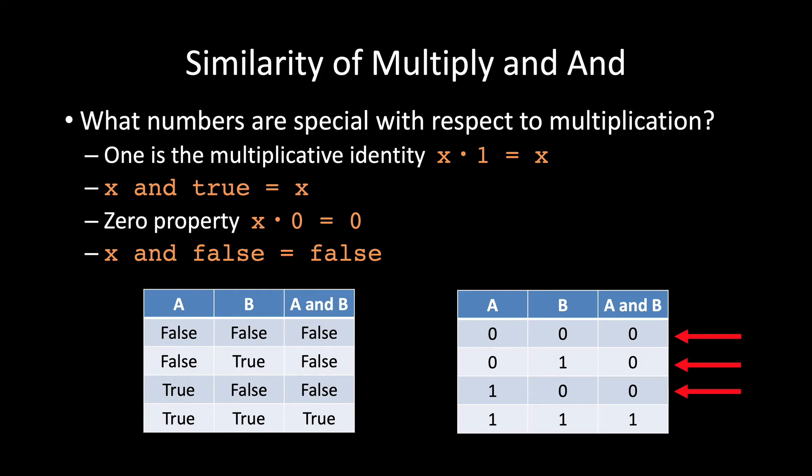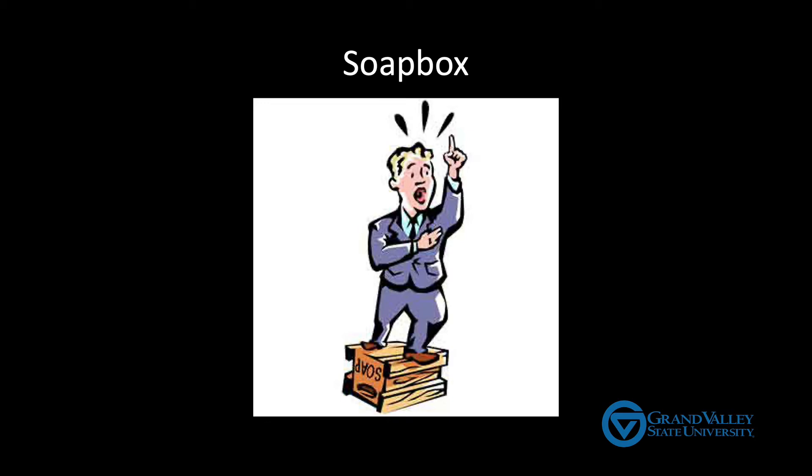Bear with me for a minute while I get on a soapbox. Think back to some of your middle school and high school math classes. Did you ever get irritated when the teacher would make you learn names for things that just didn't seem to need names? Like additive identity or additive inverse? Did you ever think, just tell me what I need to know to get the right answer? Or perhaps you were annoyed just now when I'm drawing all of these analogies instead of just saying or is plus and and is multiplication.